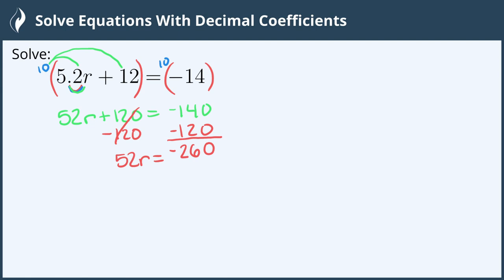Now we need to continue isolating the variable, so we'll divide both sides by 52. 52 divided by 52 cancels, so we're left with r equals, a negative divided by a positive is negative, 260 divided by 52 in my calculator gives me 5. So our solution is r equals negative 5.